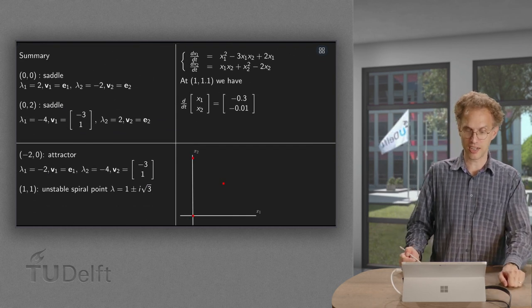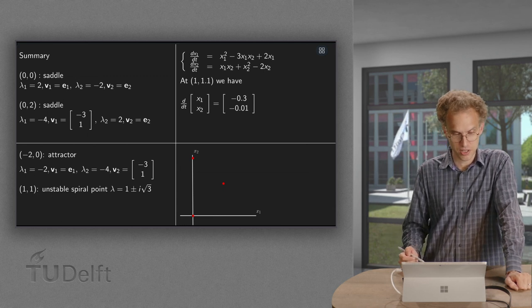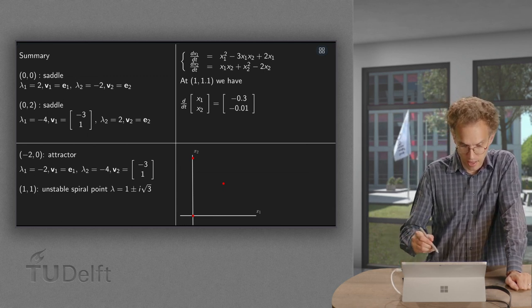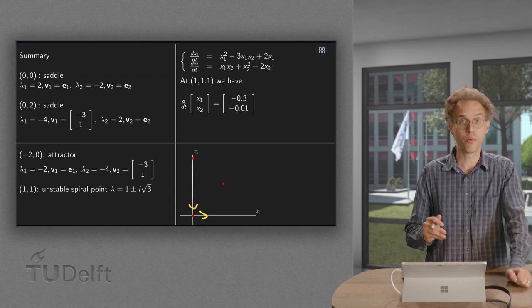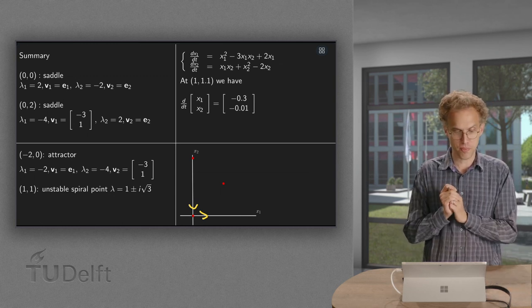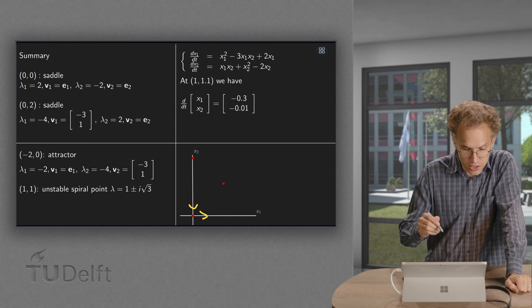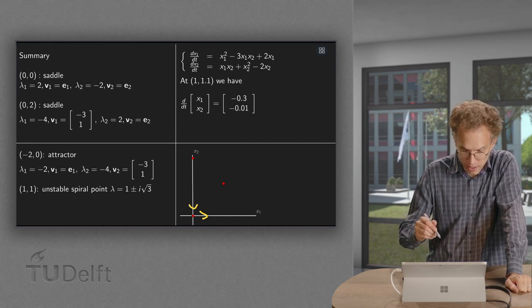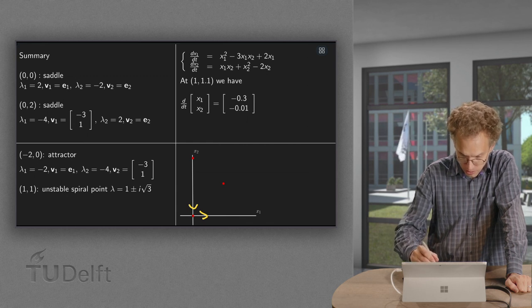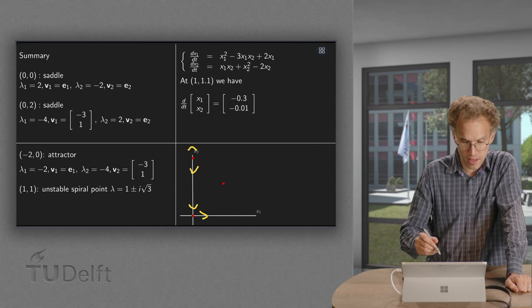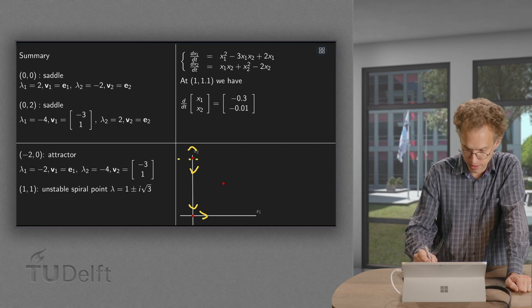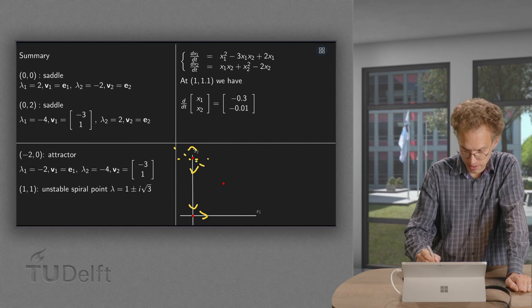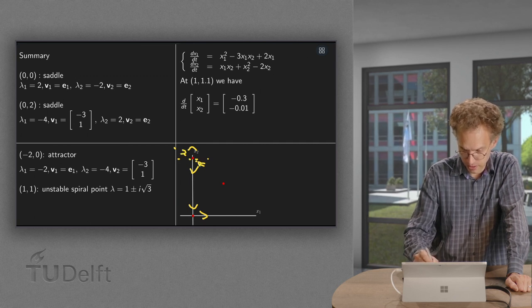So now we can try to make a sketch. First of all (0,0) is a saddle point with an outgoing along e1 and an incoming along e2. We will do only the x1 and x2 positive by the way. And then the (0,2) is also a saddle point. An outgoing direction along e2, so like this. An incoming direction along (-3,1), so that's roughly (-3,1) like this. And then an incoming direction like that.